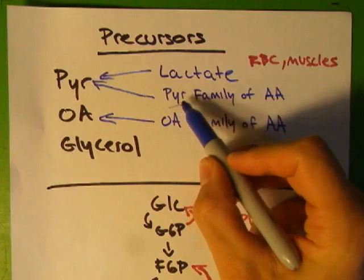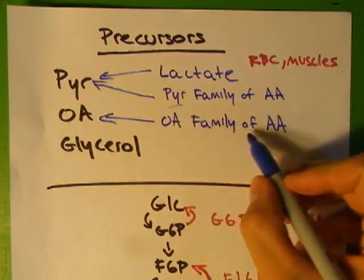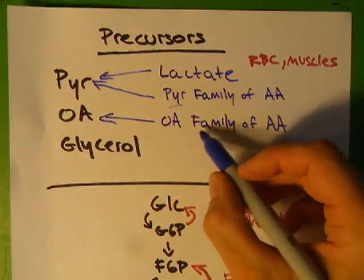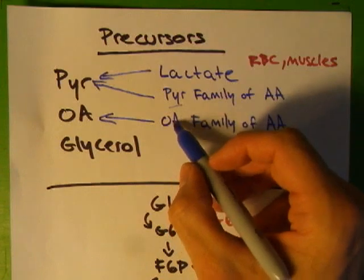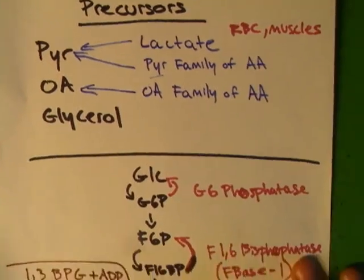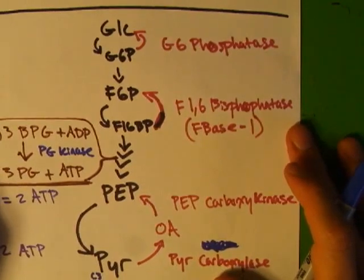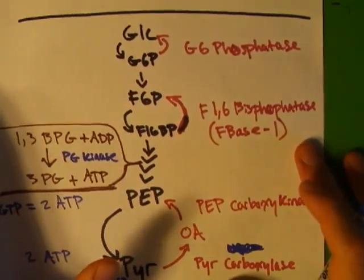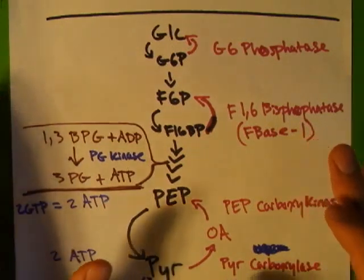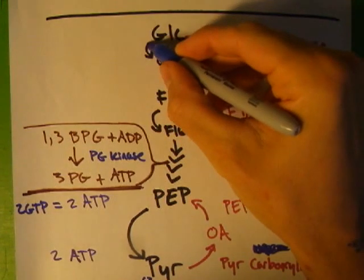Lactate and a family of amino acids will both go to pyruvate before entering in and oxaloacetate has a family of amino acids as well that will go to oxaloacetate and then up towards glucose. The first thing we're going to talk about is the new enzymes. If you remember in glycolysis there were key steps, key regulatory steps and that was mainly reactions 1, 3, and 7. And because they're regulatory they can only go one way.